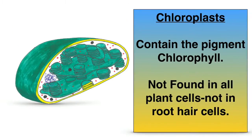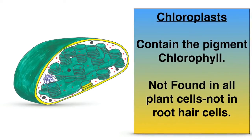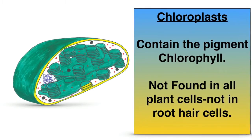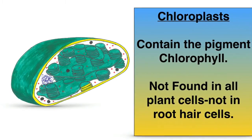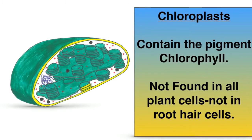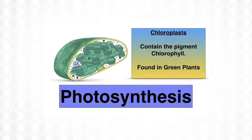Chloroplasts are those organelles unique to plant cells and they contain the pigment chlorophyll. However, you should note that not all plant cells contain chloroplasts — for example, there are none in the root hair cells. They are very important because they are the site of photosynthesis, connected to chlorophyll, that green pigment used for harvesting light energy.